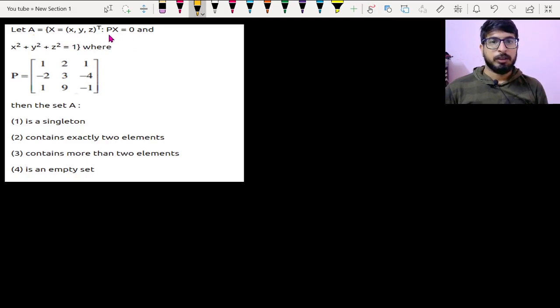xyz such that Px is 0 and x squared plus y squared plus z squared is 1. So let's assume that x is like this: small x, small y, small z, where x squared plus y squared plus z squared is 1.